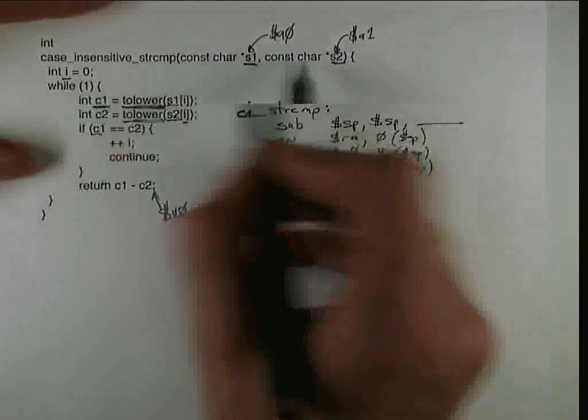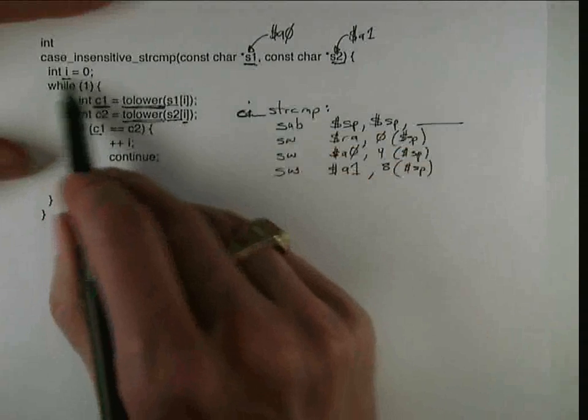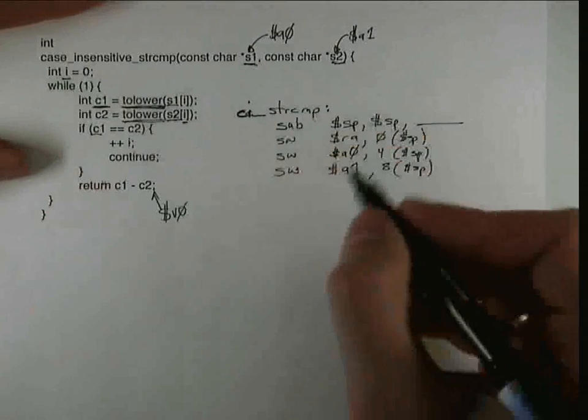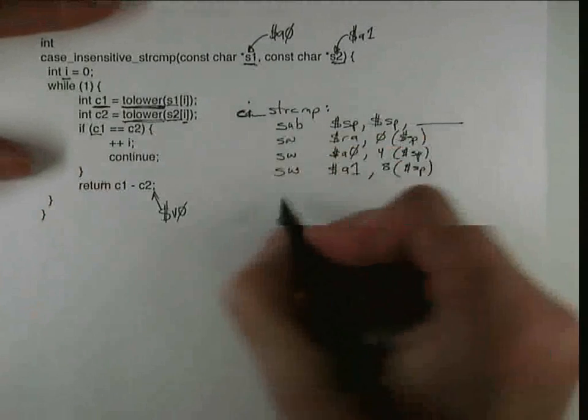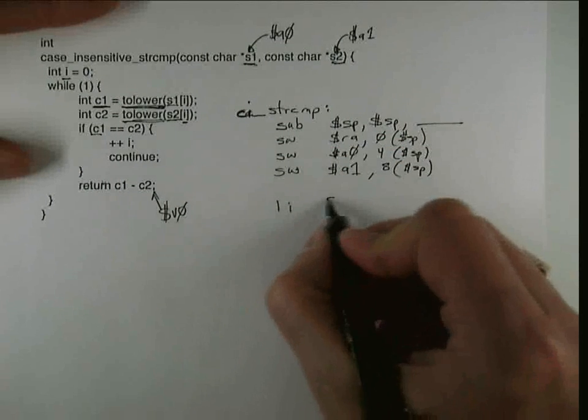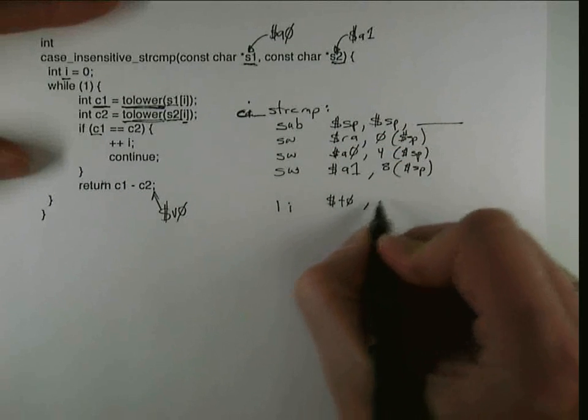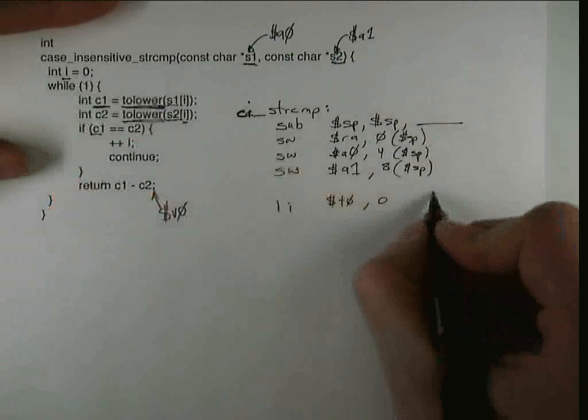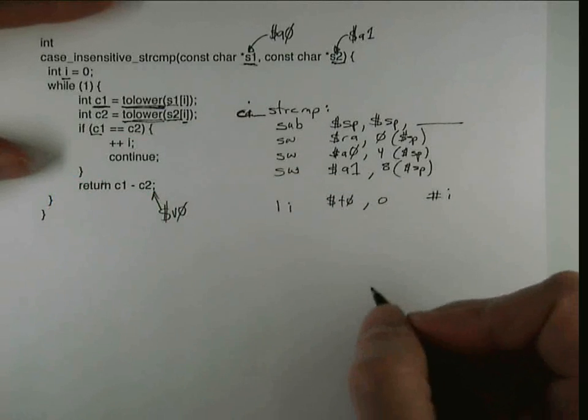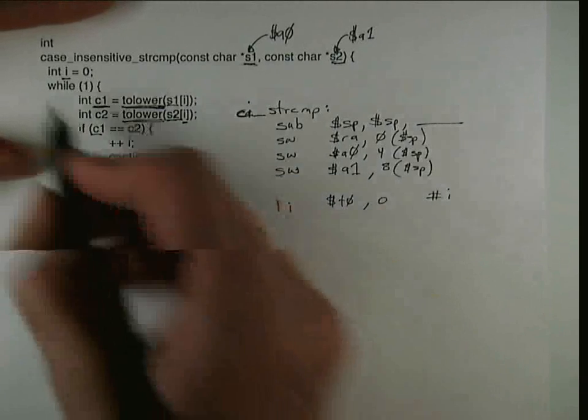So that handles these two and at this point I'm going to go ahead and start allocating I. So since I'm using caller saved registers, I'm going to allocate I into T0. So initially I is zero and so I'm going to allocate it to T0 and then we get into the loop.